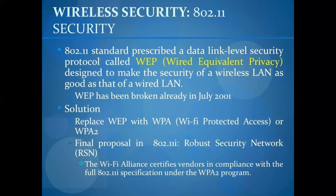Wireless Equivalent Privacy (WEP) is a data link layer security protocol for wireless LANs, designed to make the security of wireless LAN as good as wired LAN. However, WEP was broken in July 2001. The solution is to replace WEP with WPA (Wi-Fi Protected Access). The final protocol is 802.11i, which establishes a robust security network (RSN).